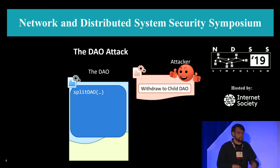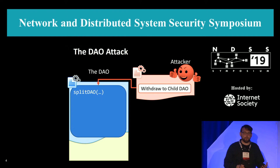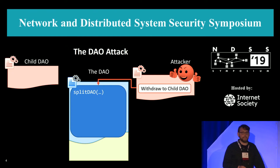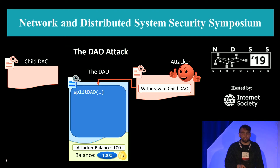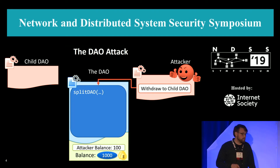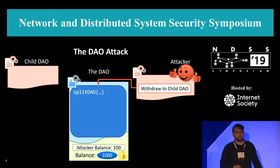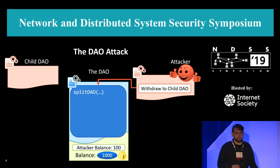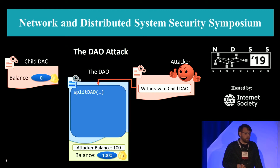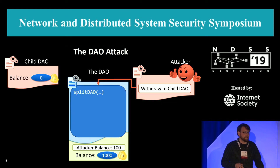The attacker calls this split DAO function, which will then create a child DAO. The DAO keeps track of the amount of ETH every user invested — in this case, 100 for the attacker. In total, the DAO has, in this example, 1,000 ETH. At the start, the child DAO has no ETH. Then the attacker will execute the split DAO.